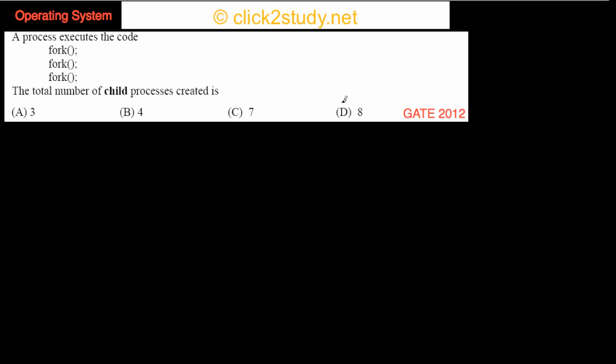So this is the next problem: a process executes the code. So there is some process, and this is the code that the process executes. The total number of child processes created is—so how many child processes are created when this code is executed? That's what we have to answer.